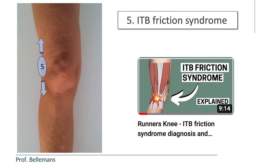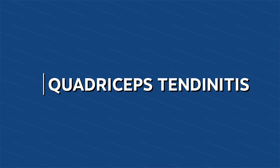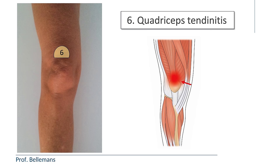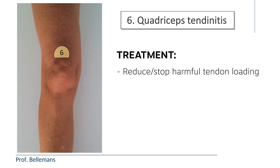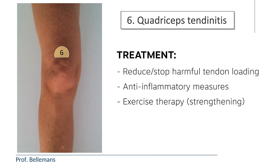6. Quadriceps tendinitis. In quadriceps tendinitis, the pain is located at the upper side of the kneecap where the quadriceps attaches, which makes the diagnosis usually easy. The treatment is to reduce or stop all harmful tendon loading, combined with anti-inflammatory measures and specific exercise therapy for strengthening the quadriceps tendon.